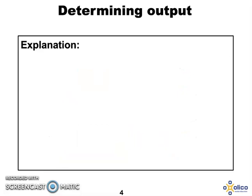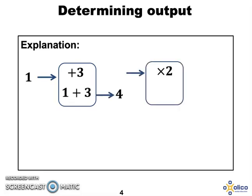If you needed an explanation, I'll go through one of the questions given. So the operator was plus 3, and put the number 1 in. 1 plus 3 is 4. Let's put the 4 into the next operator, which was times 2. 4 times 2 is 8.